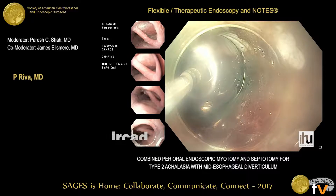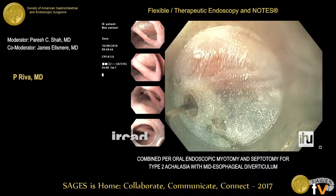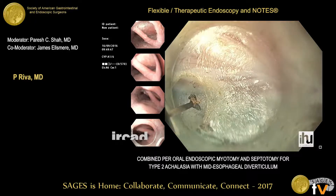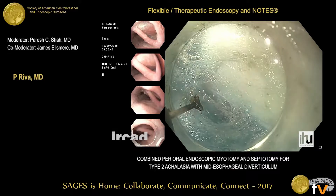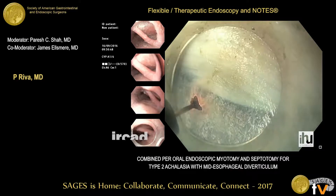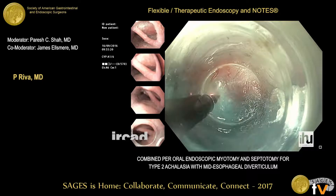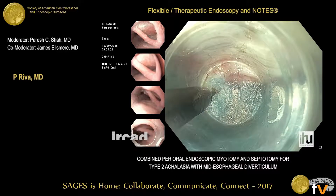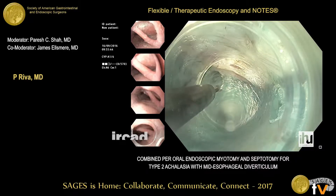Here you can see multiple injections in the submucosal tunnel. We use a TT knife to perform the submucosal dissection. This is followed by submucosal tunneling extending to the gastric cardia, two centimeters beyond the esophagogastric junction, meeting the dark blue mark created during the first part of the procedure.